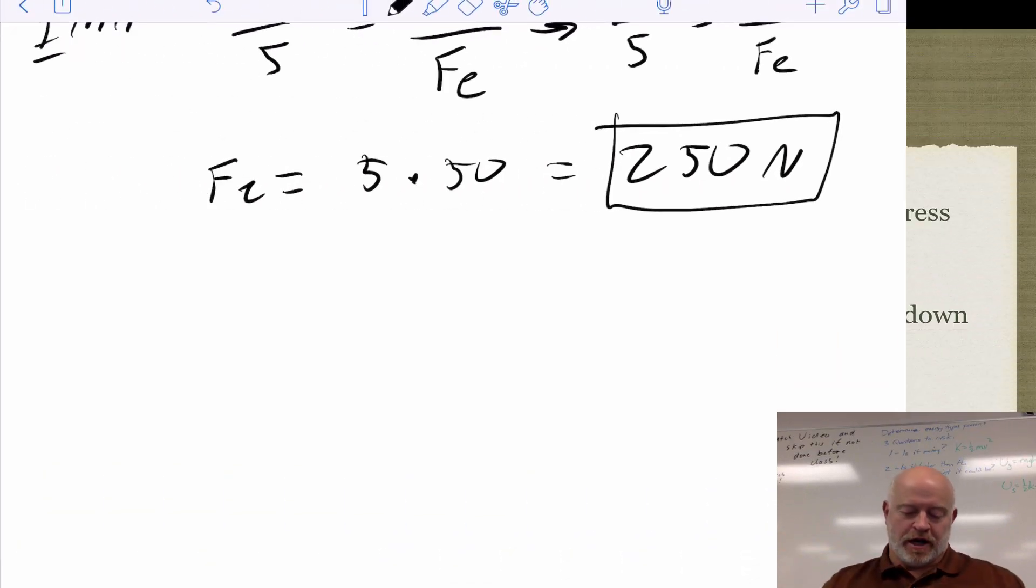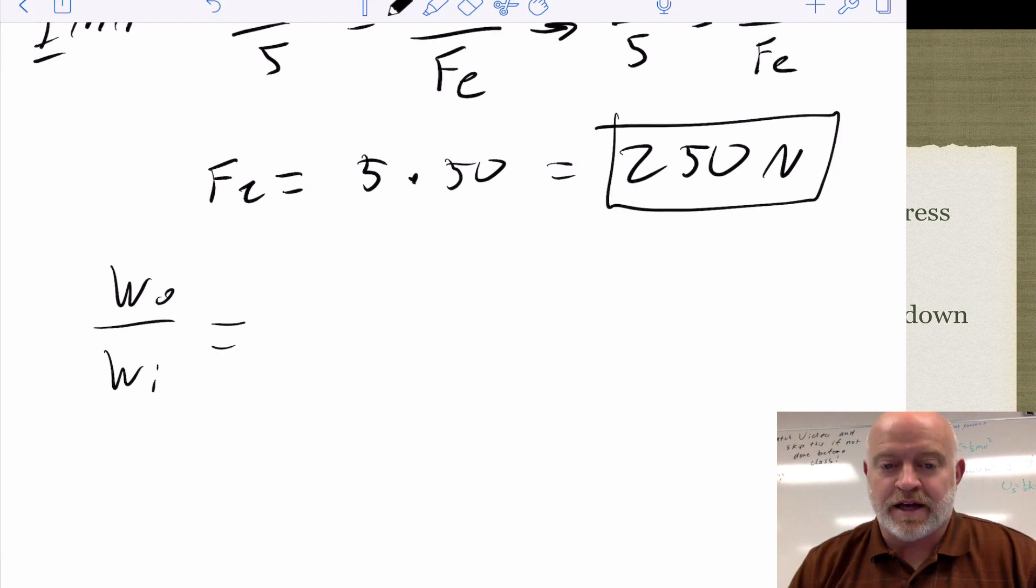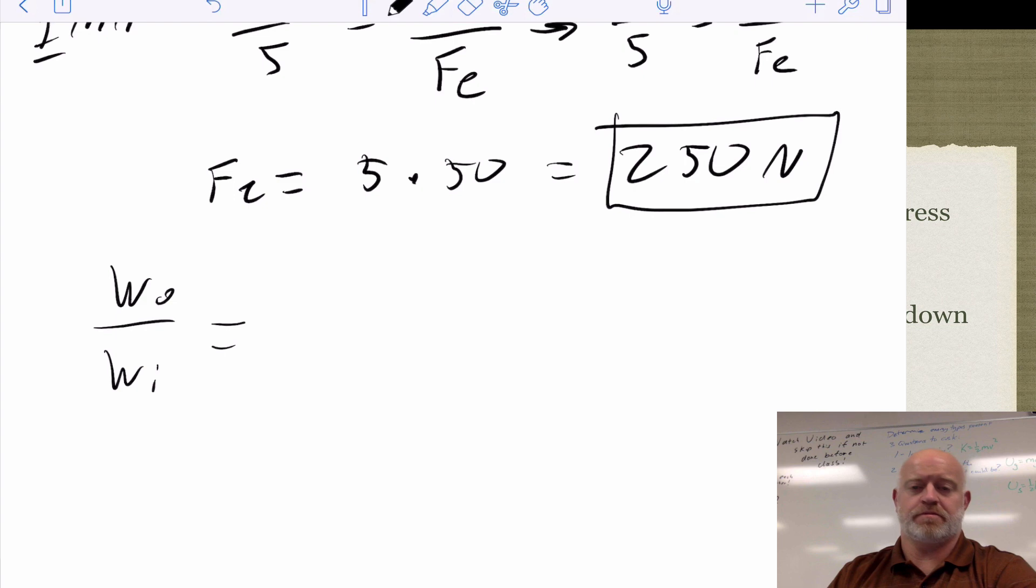All right, so here we go. We know that our force that we should be putting in, so I'm going to do this through the lens of work, so work out versus work in. Ideally, that when we do this, we should be getting a force that is 250, but we don't. So the work that we input in this scenario was 2 meters times x, or force of input. We don't know that.